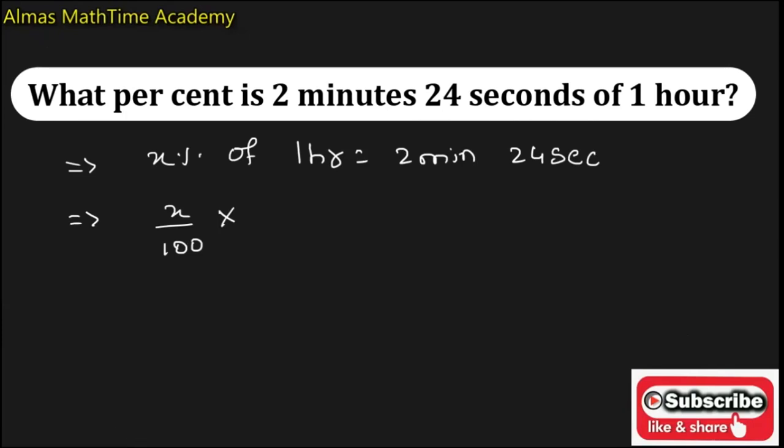1 hour I'll convert to seconds, it will give you 3600, and 2 minutes 24 seconds will become 2 into 60 seconds plus 24 seconds. Now solve this one. It will become x is equal to 2 into 60 plus 24 upon 3600 into 100.